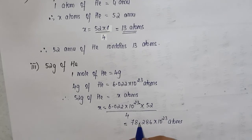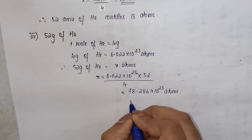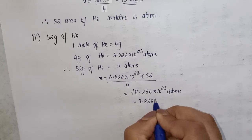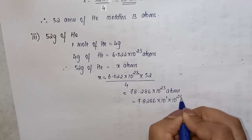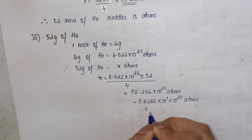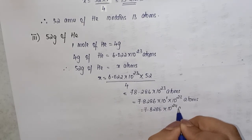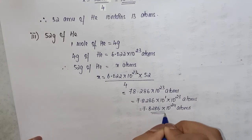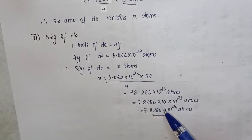Similarly, when we convert to scientific notation by shifting one decimal place, we get 7.8286 × 10¹ × 10²³ atoms. Adding the powers: 7.8286 × 10²⁴ atoms. It's straightforward once you know the correct relation and approach for each type of question.